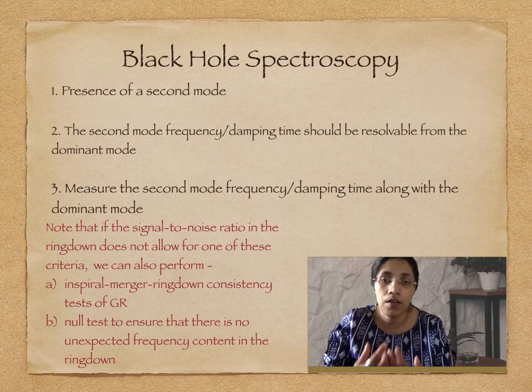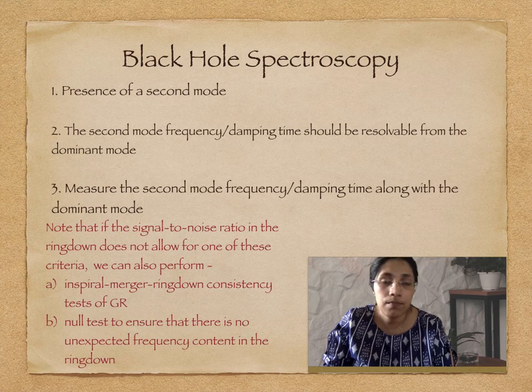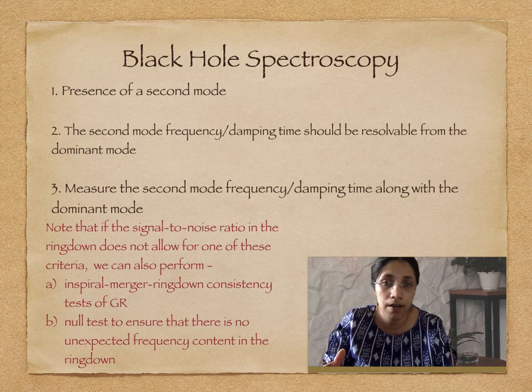Measuring the quasi-normal mode frequency and damping time in a black hole ringdown is what is called black hole spectroscopy. Black hole spectroscopy is a very important tool for testing strong-field GR, because it allows you to check if the analytical prediction is consistent with what is observed. If you can measure more than one quasi-normal mode, then you can perform consistency tests of whether the mass and spin inferred by two different parameters—like two frequencies and a damping time—are consistent with each other.